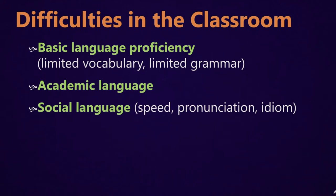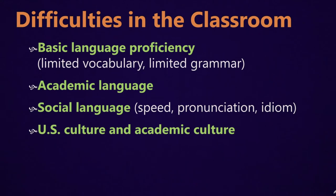The difficulty with social language is the speed at which native speakers talk, the pronunciation they might use depending on what part of the country they live in, and the idiomatic language they use — like idioms, jargon, slang, etc. Another difficulty is just generally U.S. culture and academic culture.